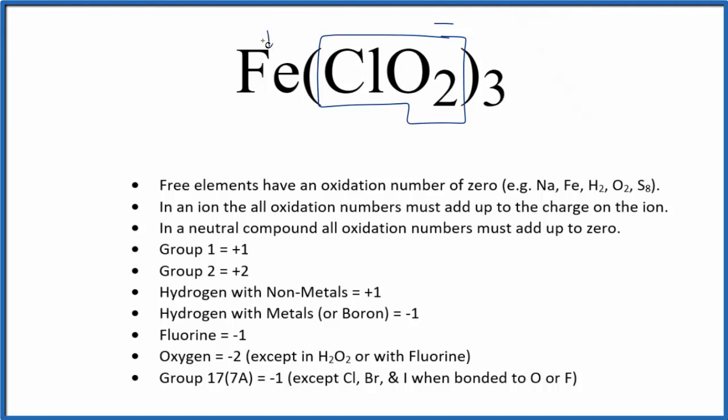The iron has to be a positive 3 for all the oxidation numbers to add up to zero. So the oxidation number for the iron in iron 3 chloride is plus 3, and that makes sense—we're calling it iron 3 chloride because of this 3 right here.